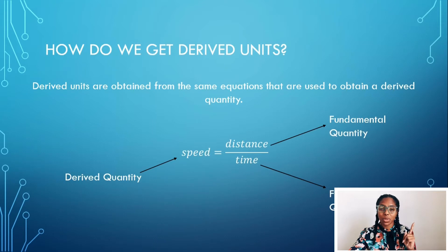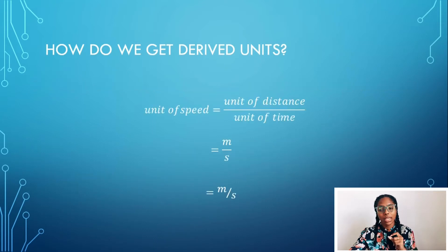Now what is the unit for speed? The unit of speed is equal to the unit of distance over the unit of time. The unit of distance is meters, and the unit of time is seconds. So that's why we have meters per second. That's the unit we usually use when we're doing calculations. That's where we get that from.